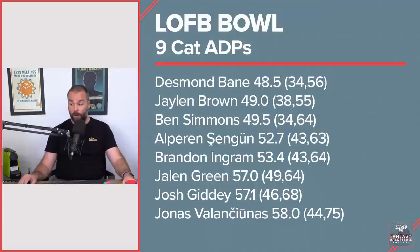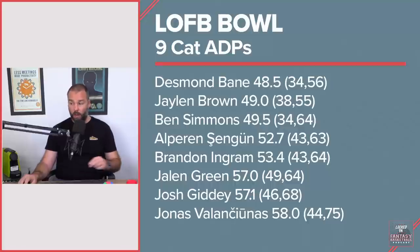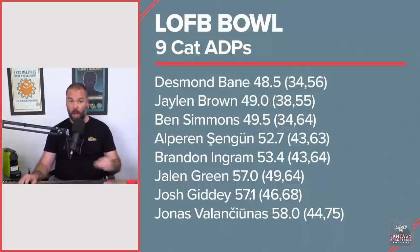Ingram at 53.4 — somehow he fell to 64 in a league, don't know how. Jalen Green at 57: Jalen Green going on average behind Sengun is pretty crazy to me. Green's highest pick was 49 and lowest was 64. I can easily see him as a top 40 player.